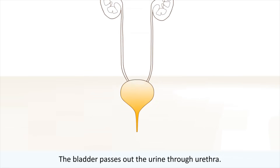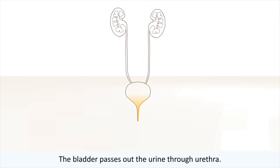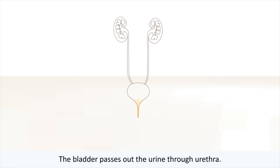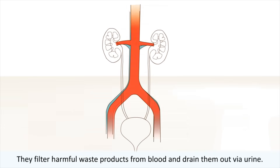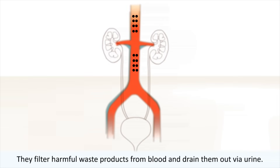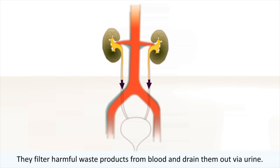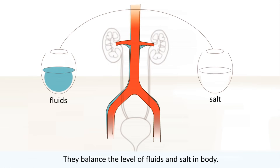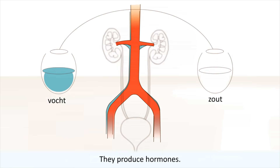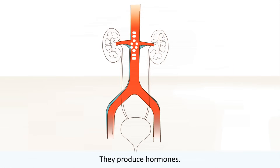The bladder passes out the urine through the urethra. Kidneys have three important functions: they filter harmful waste products from the blood and drain them out by urine, they balance the level of fluids and salt in the body, and they produce hormones.